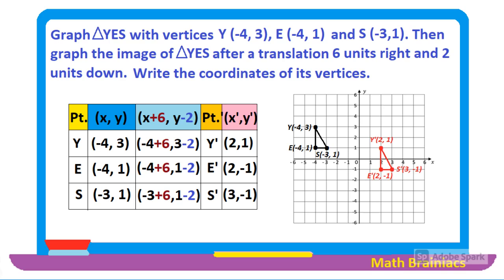To wrap it up: first, plot the points of the pre-image. Then identify the translation — if it is to the right, add to the x coordinate; if to the left, subtract from the x coordinate. If it is going up, add to the y coordinate; if going down, subtract from the y coordinate. Then plot the translated ordered pairs and you can see the translated figure.